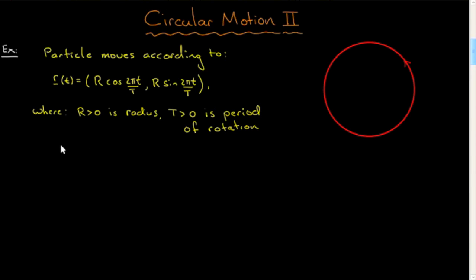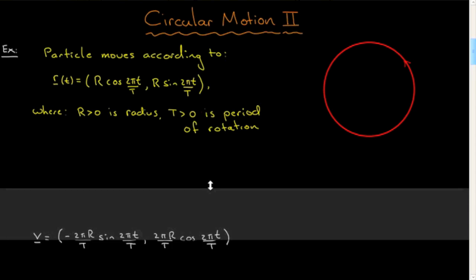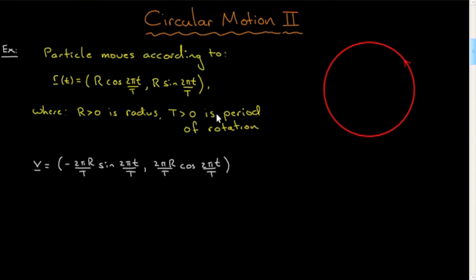And I didn't put on here, but the question would be essentially the same: compute the velocity vector, the speed, the acceleration vector, plot some of the vectors along with the path of the particle. That would be a typical question, as before I've started to do it, although I've stopped short in this case because I want to emphasize a couple little points.